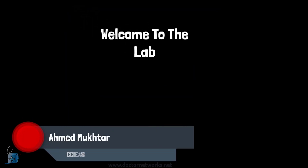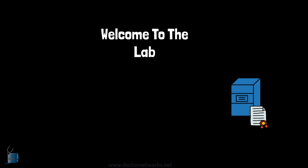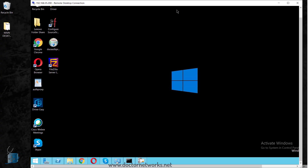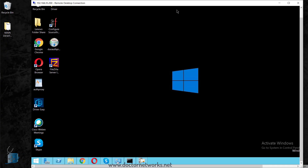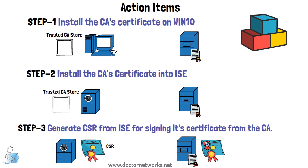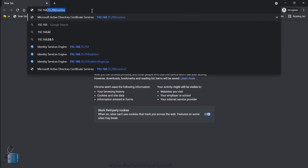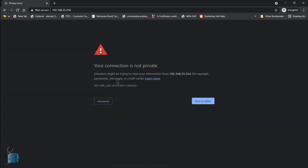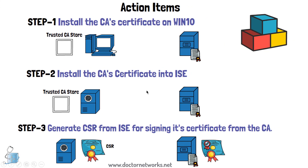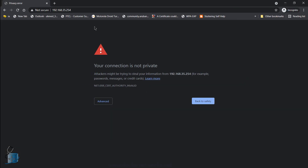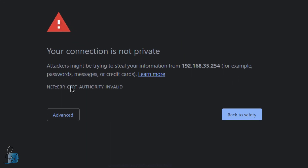Welcome to the lab. We have three main components: the certificate authority server, the Windows 10 machine, and the ISE server. Connecting to ISE at 192.168.35.254, as shown in the topology, we can already see a certificate error. The error specifically states that the certificate authority is invalid.